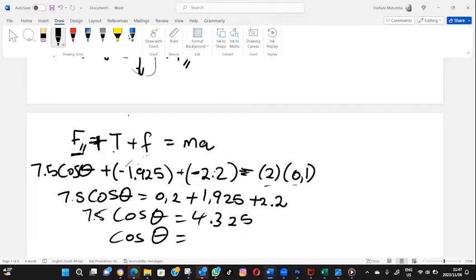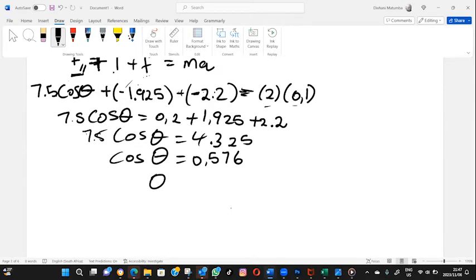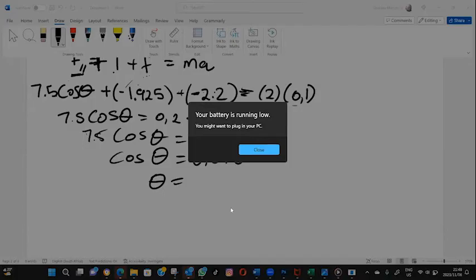I'm going to my calculator. The answer that I got was cos of theta is given by 0.576. And if you go to your calculator, you'll find out that theta is given by, let me calculate, cos inverse of 0.577.